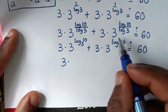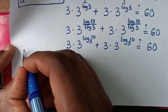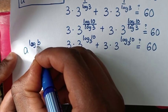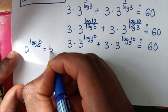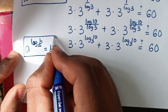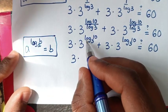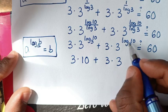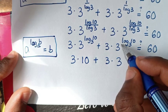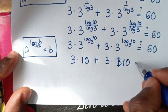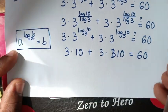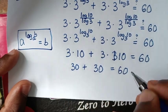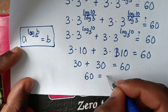This part is in the form of a power of log b base a, which equals b. Applying that identity, 3 power of log 10 base 3 equals 10. So it becomes 3 times 10, plus 3 times 10, which is 30 plus 30, equal to 60.